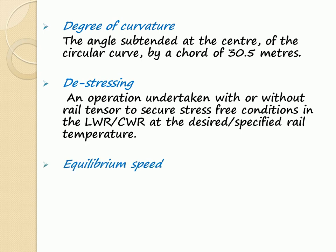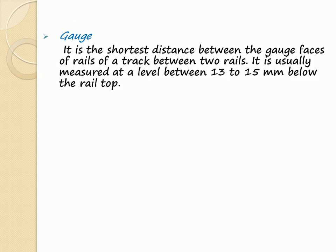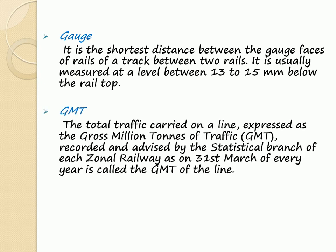Equilibrium Speed: The speed at which the centrifugal force developed during the movement of a vehicle on a curved track is exactly balanced by the cant provided. Gauge: It is the shortest distance between the gauge faces of the rails of a track. It is usually measured at a level between 13 to 15 mm below the rail top. GMT: The total traffic carried on a line, expressed as gross million tons of traffic, recorded and advised by the statistical branch of each zonal railway as on 31st March of every year.